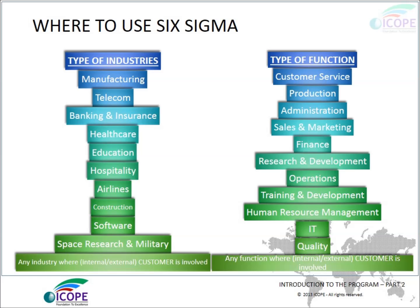Any industry where internal and external customers are involved. Any function — customer service, production, administration, sales and marketing, finance, research and development, operations, training and development, human resource management, IT, and quality. Precisely, Six Sigma can be used in any type of industry and any type of function.